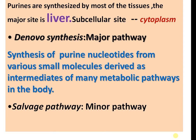Purines are synthesized by most tissues; the major site is the liver and the subcellular site is the cytoplasm. De novo is the major pathway for synthesis of purine nucleotides, involving various molecular intermediates of many metabolic pathways in the body. The salvage pathway is a minor pathway.